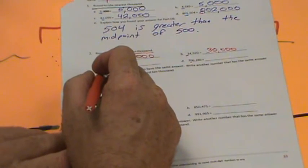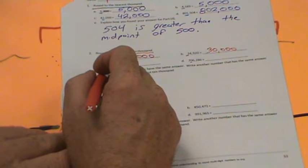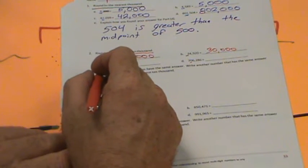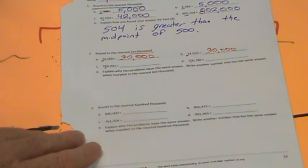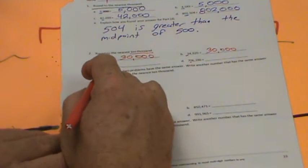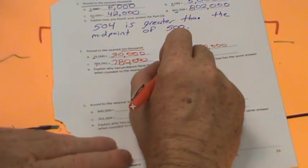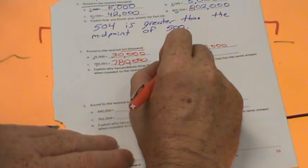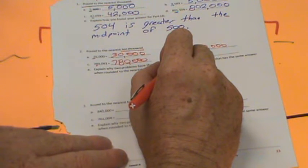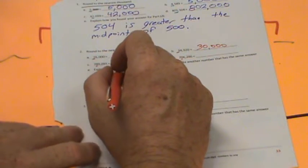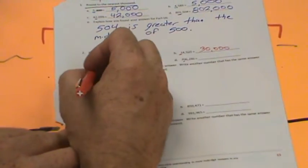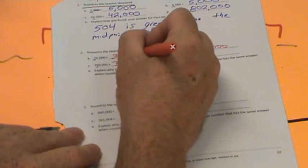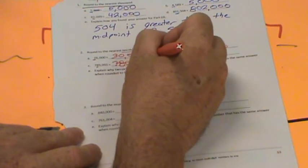Over here, we have 789,000. Is this going to be closer to 90,000 or 80,000? In this case, 790,000 or 780,000? 789 is pretty close to 790. So this is going to be 790,000. It's been a long day.